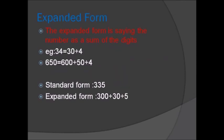Expanded form. The expanded form is the number as the sum of the digits. Example: Thirty-four equals thirty plus four. Six fifty equals six hundred plus fifty plus four.